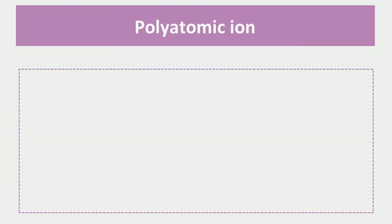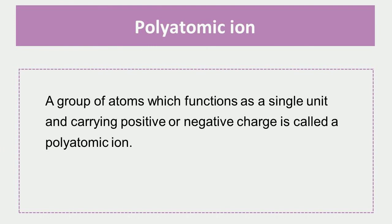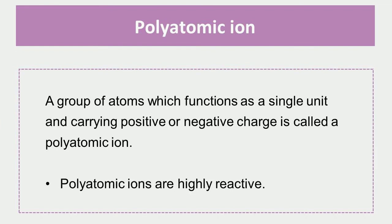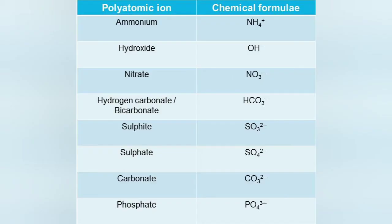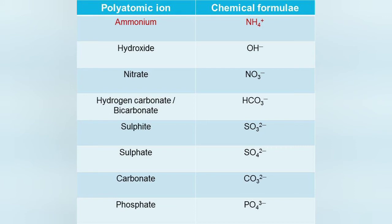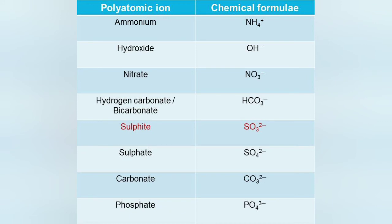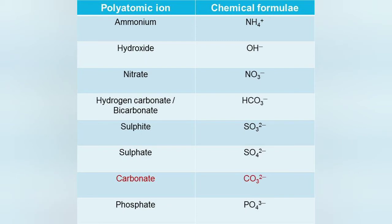Then we have polyatomic ions. Polyatomic ions are defined as a group of atoms which functions as a single unit and carries positive or negative charge. Polyatomic ions are highly reactive. Some examples are: ammonium ion NH4+, hydroxide ion OH−, nitrate ion NO3−, hydrogen carbonate (bicarbonate) HCO3−, sulfite ion SO3²−, sulfate ion SO4²−, carbonate ion CO3²−, and phosphate ion PO4³−.